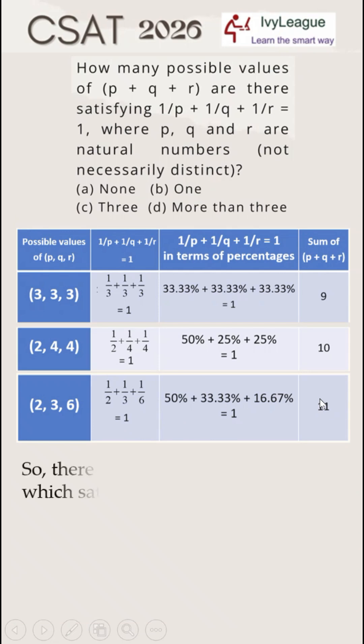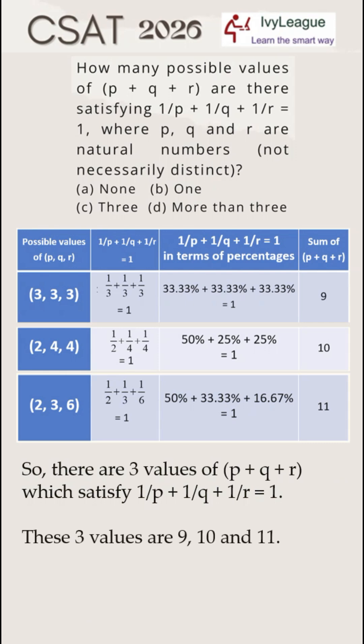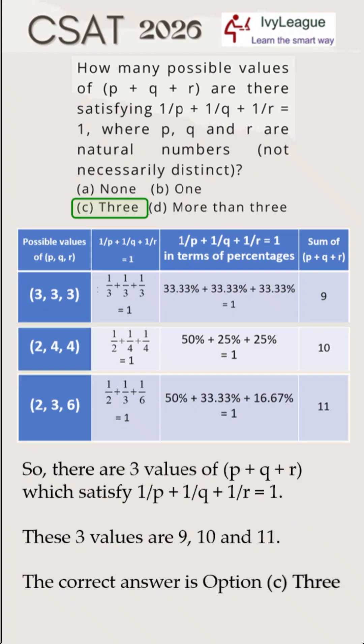So there are 3 values of sum of P plus Q plus R which satisfy the condition. These 3 values are 9, 10 and 11. The correct answer is option C or 3.